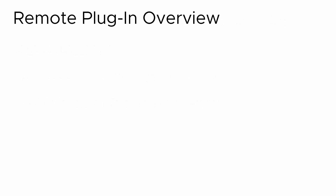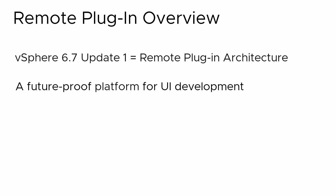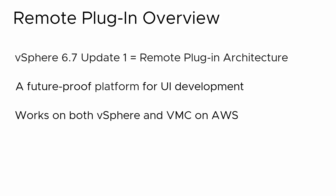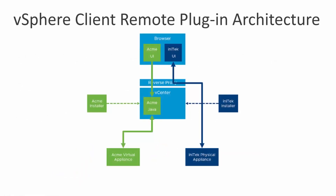Starting with vSphere 6.7 Update 1, the vSphere client uses a remote plug-in architecture and ensures a future-proof platform for building UI extensions for both vSphere and VMware Cloud on AWS. The vSphere client remote plug-in architecture provides the following enhancements over the local plug-in architecture.